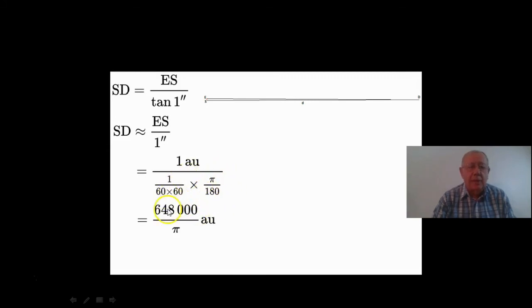So simplifying that, that comes out as this number here, 648,000 divided by pi. So that is the new definition of a parsec.